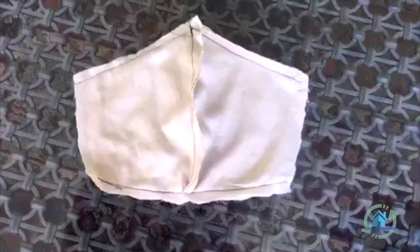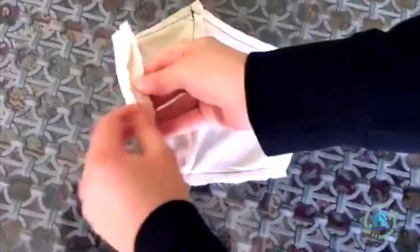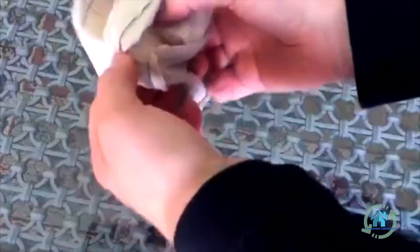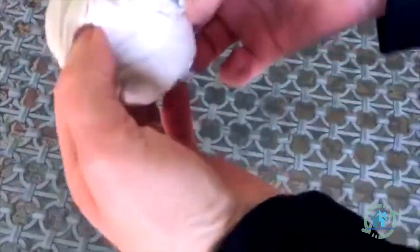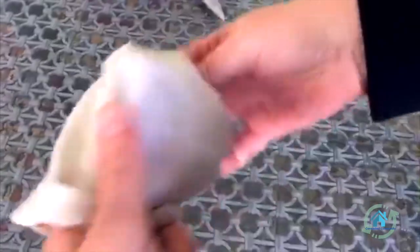Now that you're done sewing, and you did not sew the sides, right? Good. Now you're going to turn it inside out so that the seams are on the inside of the mask.